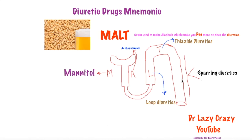Finally, potassium-sparing diuretics work in a similar manner — they block sodium channels so sodium cannot be reabsorbed, and water follows it, causing diuresis. However, they spare potassium, allowing it to come back into the tubules, which can cause hyperkalemia.